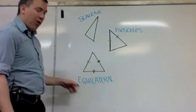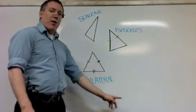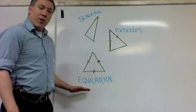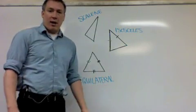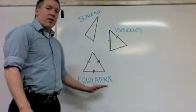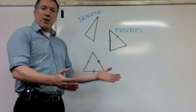And then lastly, if all three sides are the same, we call it an equilateral triangle. Equa for equal, lateral means side. So, all the sides are equal, equilateral. Those are our three classifications.